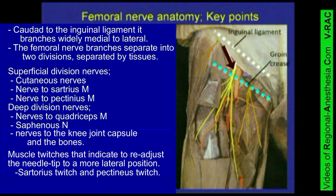The femoral nerve passes into the leg posterior to the inguinal ligament and lateral to the femoral artery. The nerve also lies in an entirely separate fascial compartment to that of the artery. It is for this reason that peri-arterial nerve block techniques most often fail to block the femoral nerve. The femoral vein lies medial to the artery.